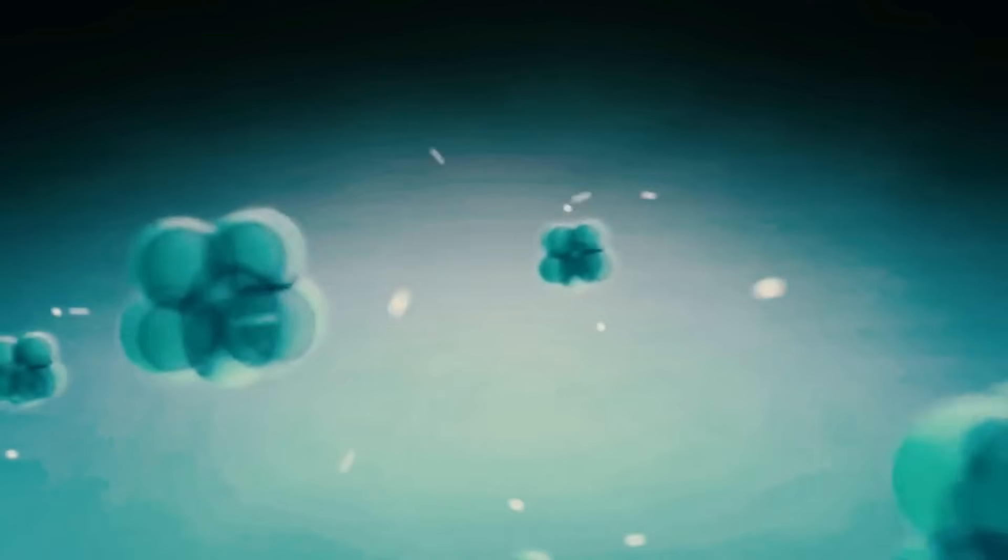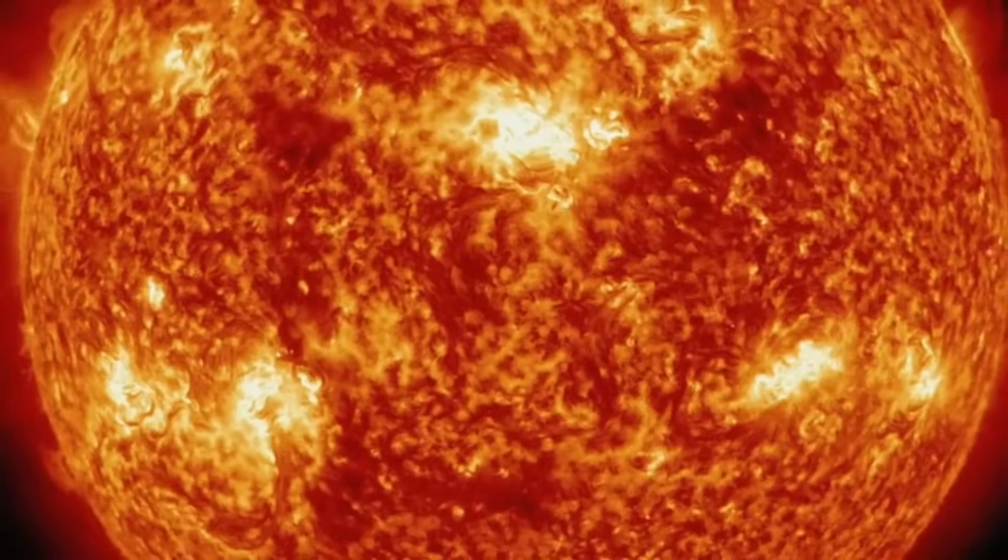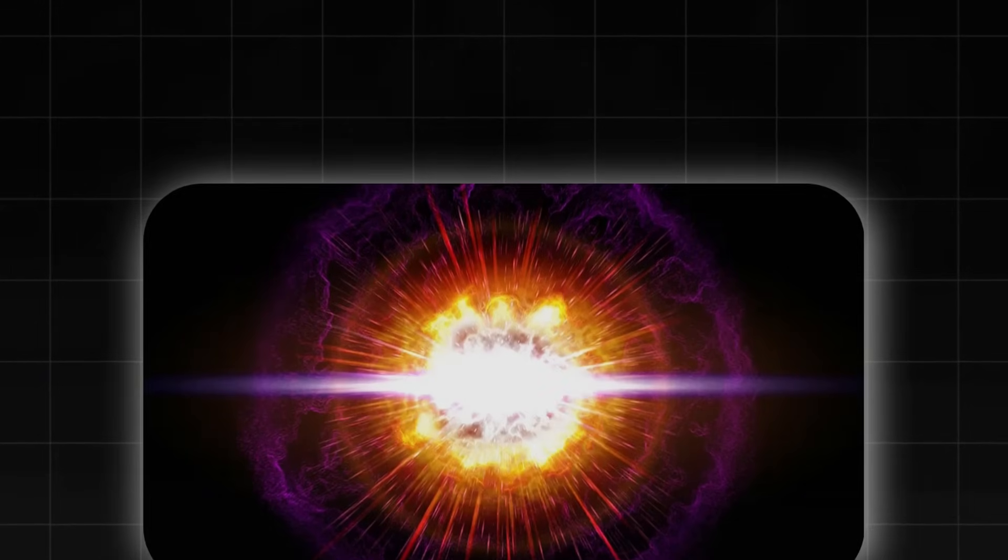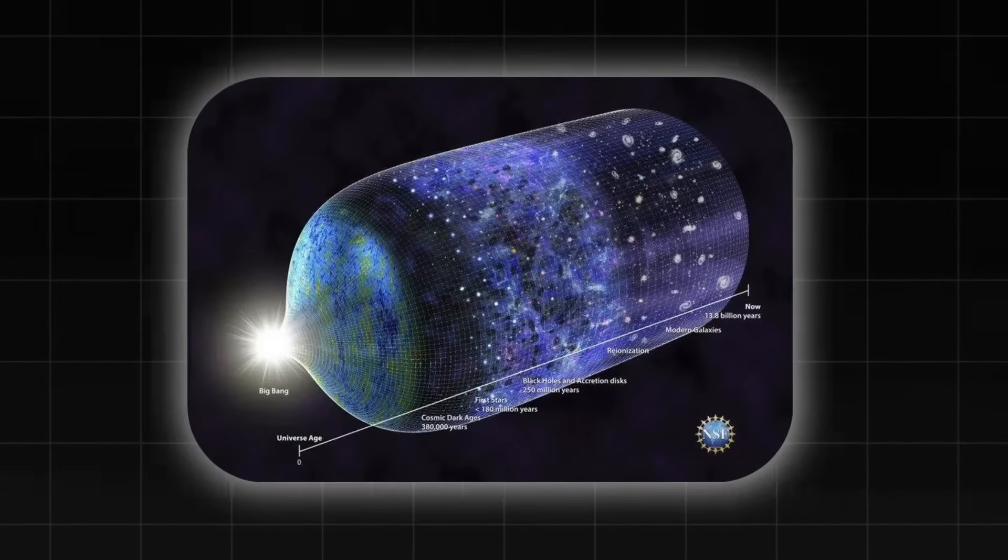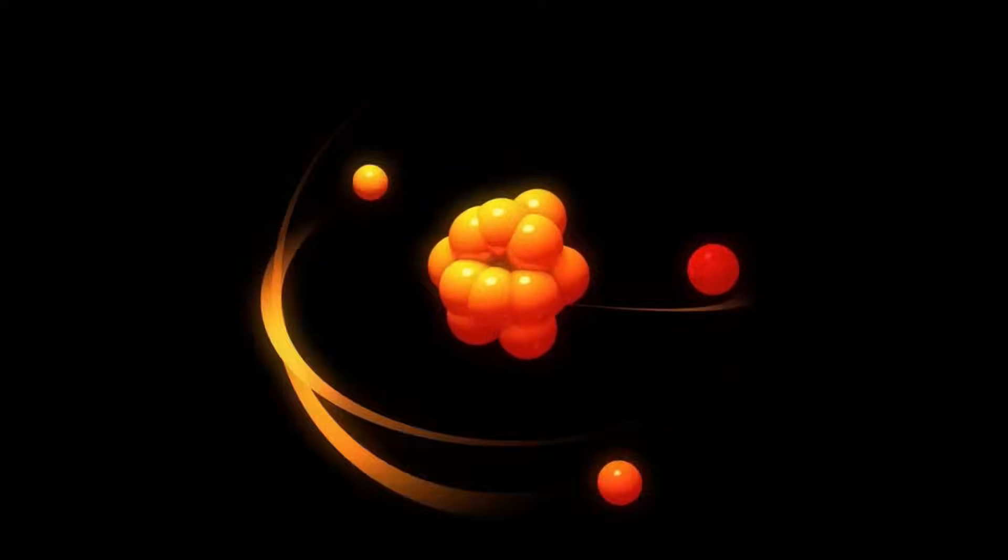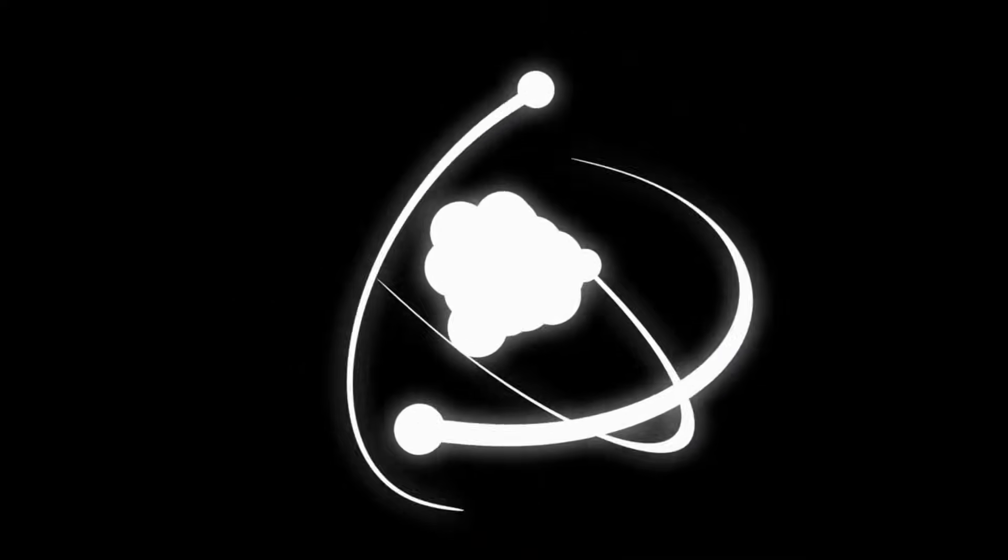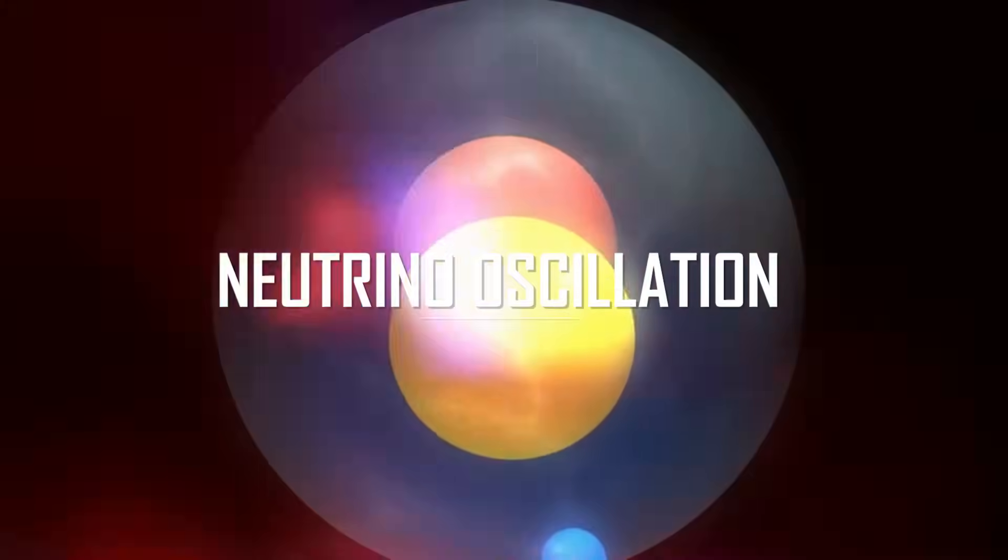These particles are produced in some of the most violent and energetic events in the universe. Inside the sun, during supernova explosions, and even in the aftermath of the Big Bang itself. They come in three known types, or flavors: electron, muon, and tau neutrinos. However, what makes neutrinos truly bizarre is their ability to change from one type to another as they travel, a phenomenon known as neutrino oscillation.